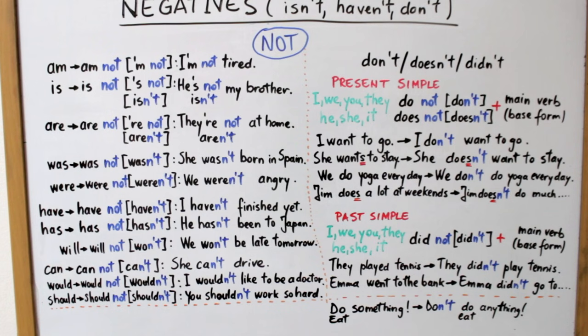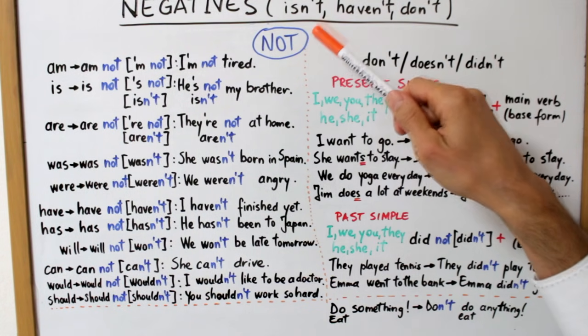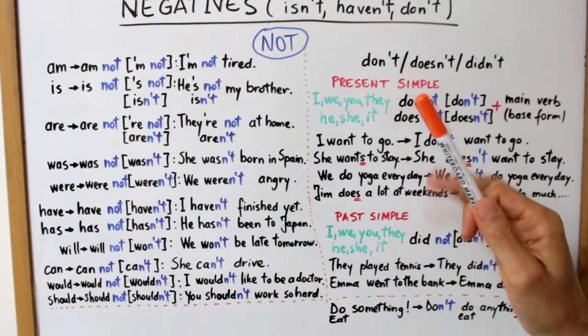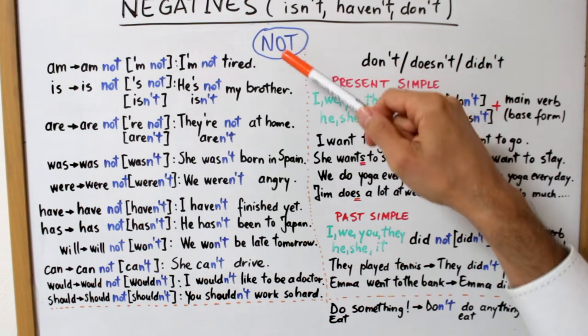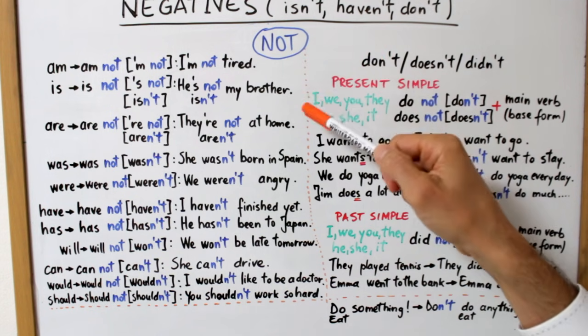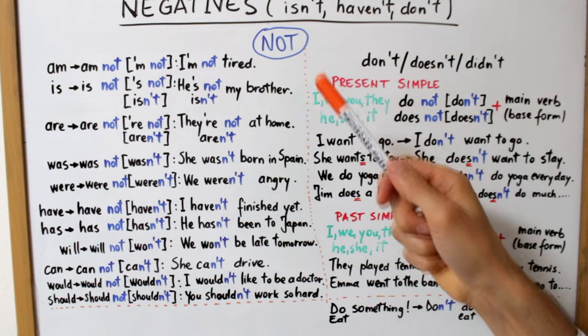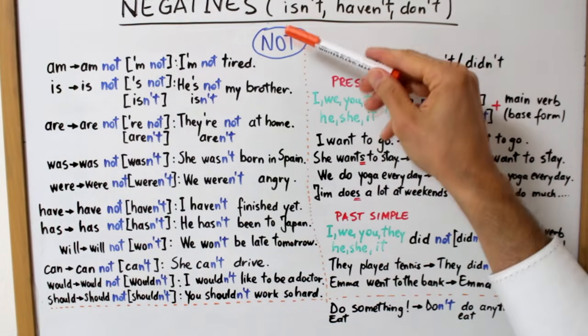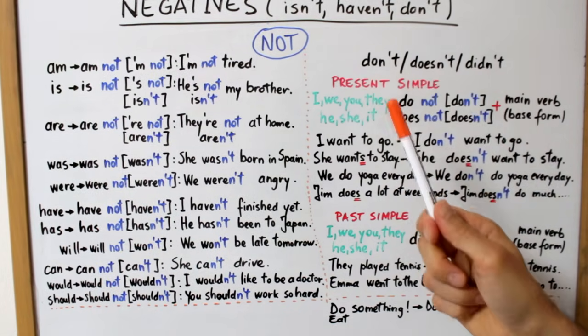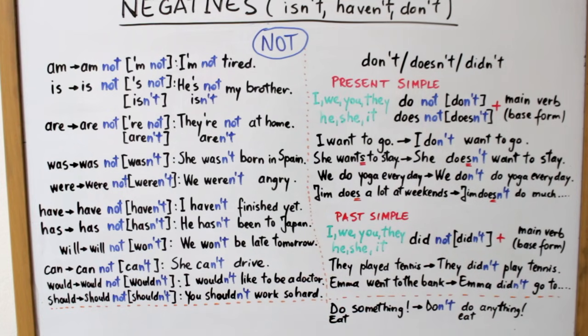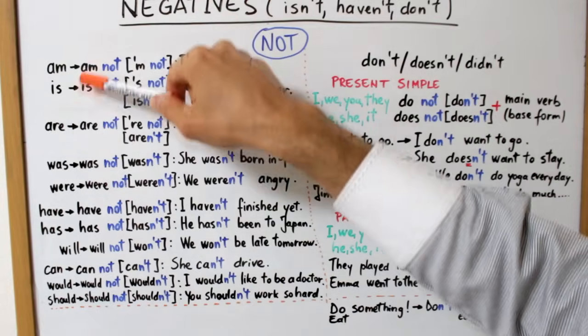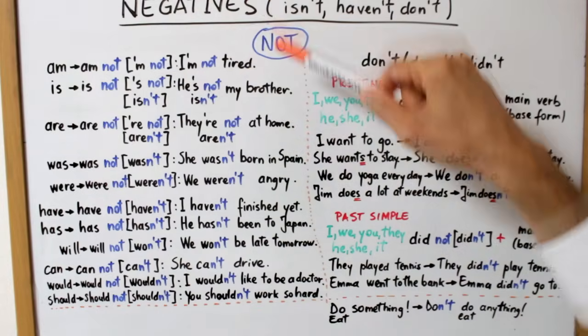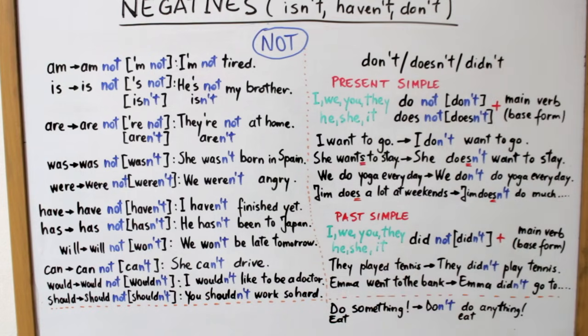Cum spuneam, cuvântul cheie în exprimarea negativului în engleză este NOT. Acest O este pronunțat ca o combinație între O și A. Mai spre O în engleza britanică, NOT, și mai spre A în engleza americană, NOT. Să vedem cum se aplică această negație, această particulă NOT, în cazul unor timpuri și moduri verbale. Mai întâi, avem formele lor la afirmativ, apoi cum se transformă ele la negativ și câte un exemplu în propoziție pentru fiecare.